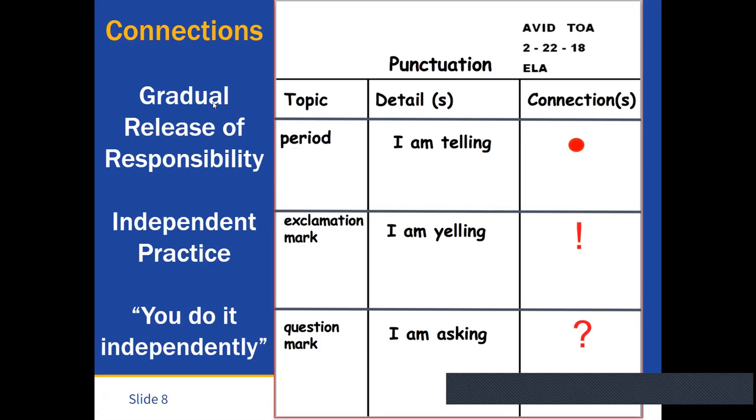So then using the gradual release of responsibility in the third column, students will be making connections. And so this is kind of where they do the independent practice. So boys and girls, we've talked about a period. We know that we use it in a sentence when we're telling something. Go ahead and what's your personal connection? Typically in this column students like to draw pictures.